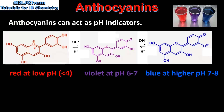At low pH the cyanidin molecule is protonated and has a positive charge. As the concentration of hydrogen ions decreases, the molecule becomes deprotonated and has a negative charge at high pH. As the molecule becomes deprotonated, there is a change in the amount of conjugation in the molecule.